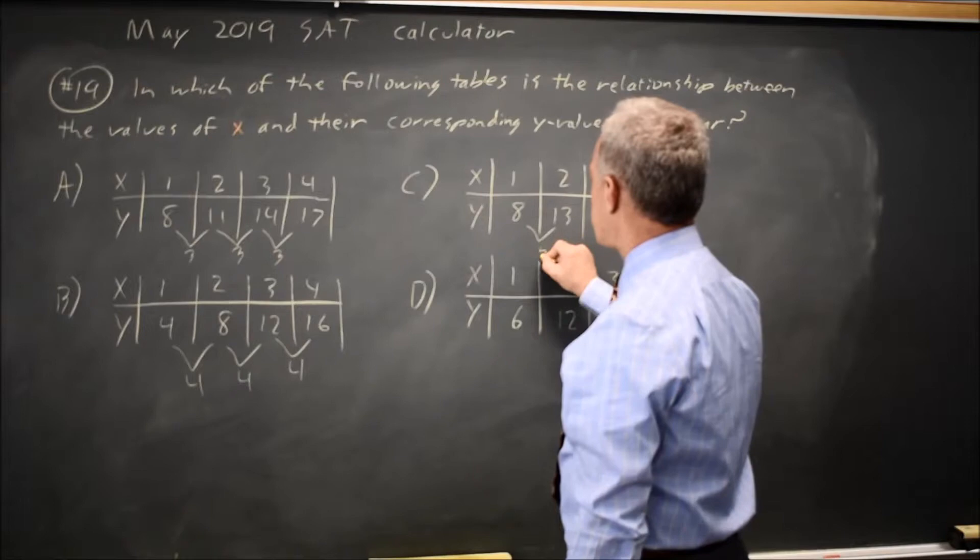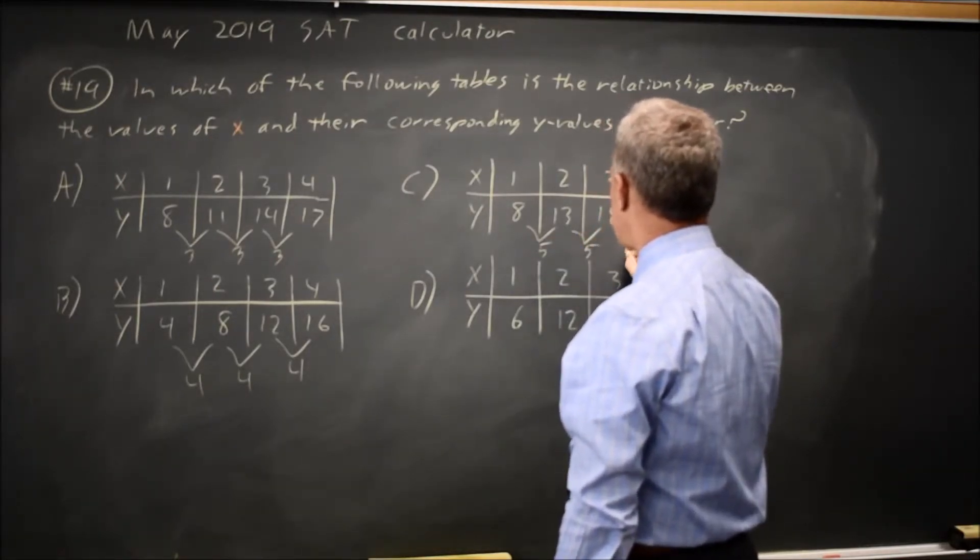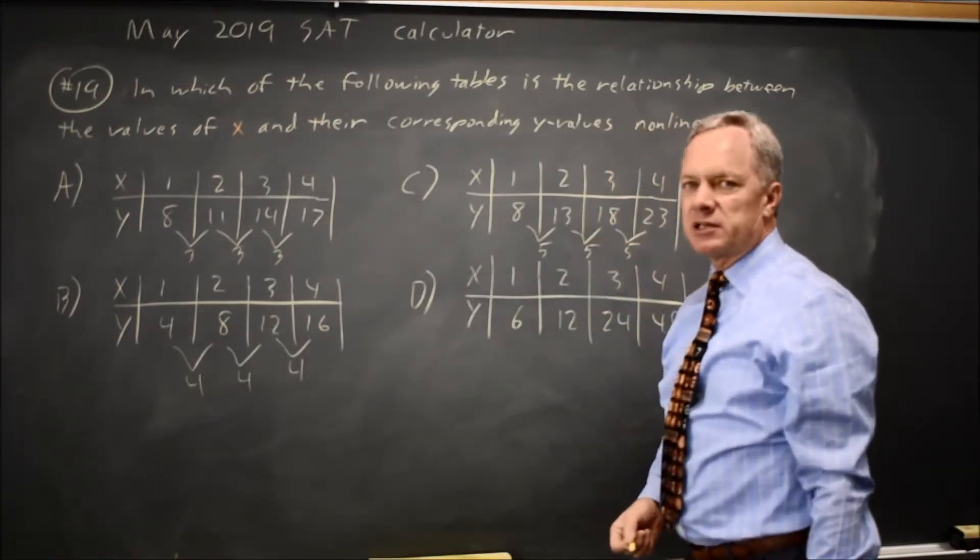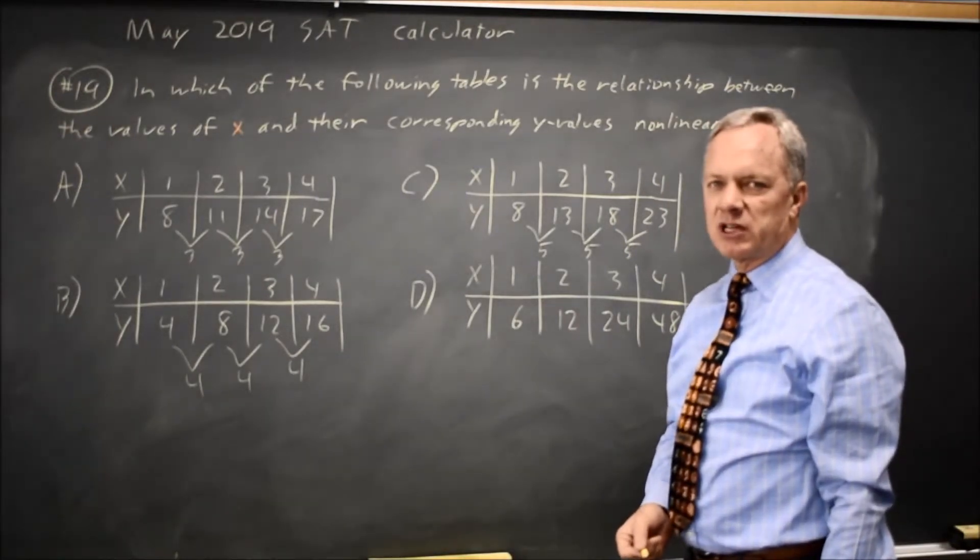Here, 8 plus 5 is 13, 13 plus 5 is 18, 18 plus 5 is 23. Again, when x goes up by 1, y goes up by 5, so this is linear.